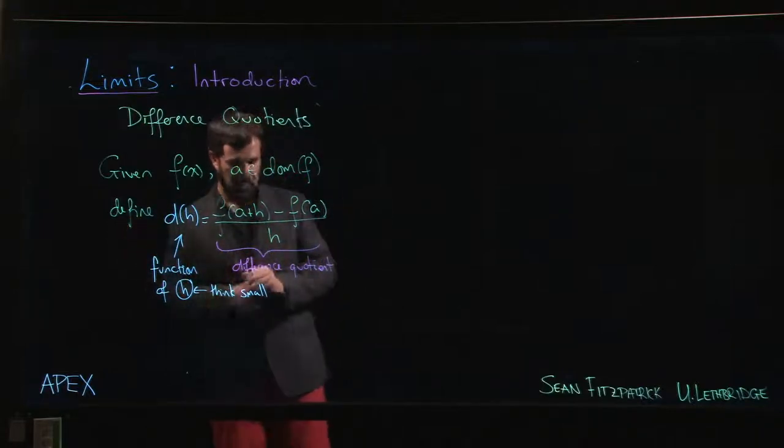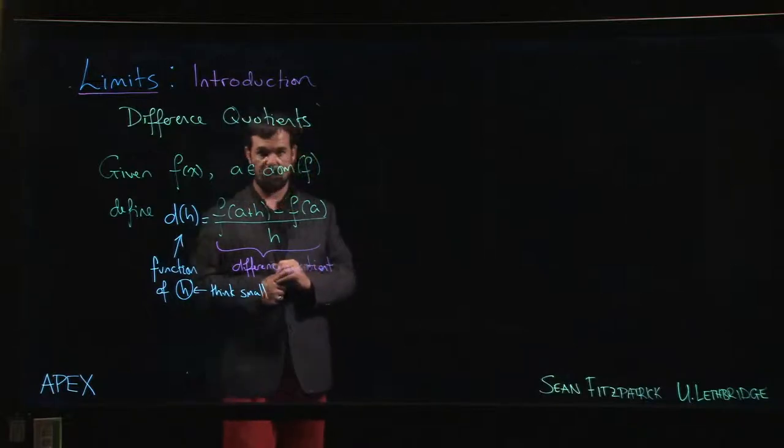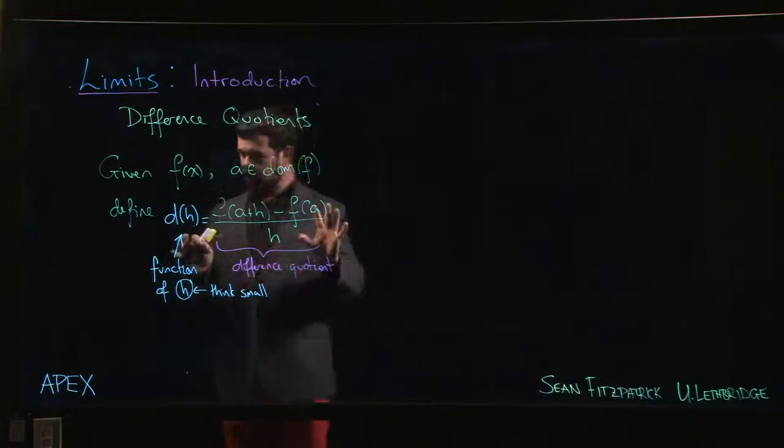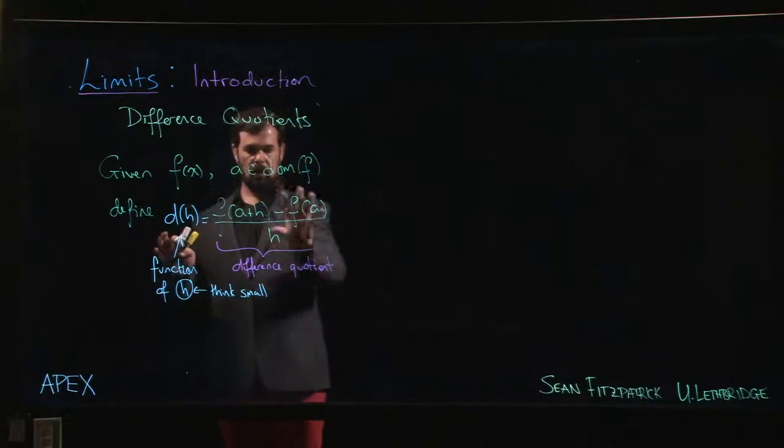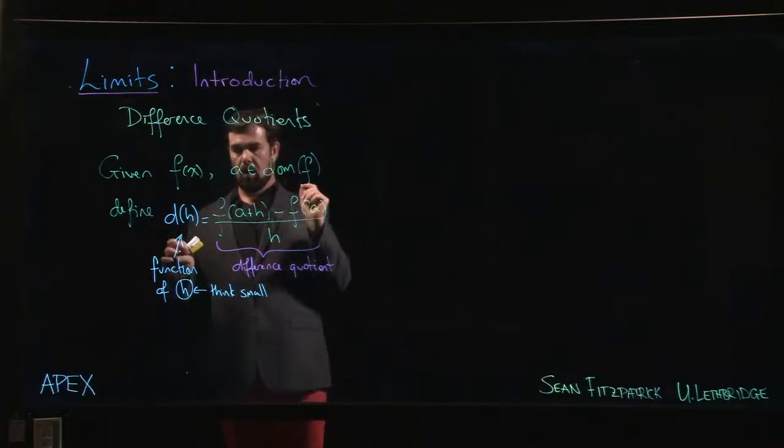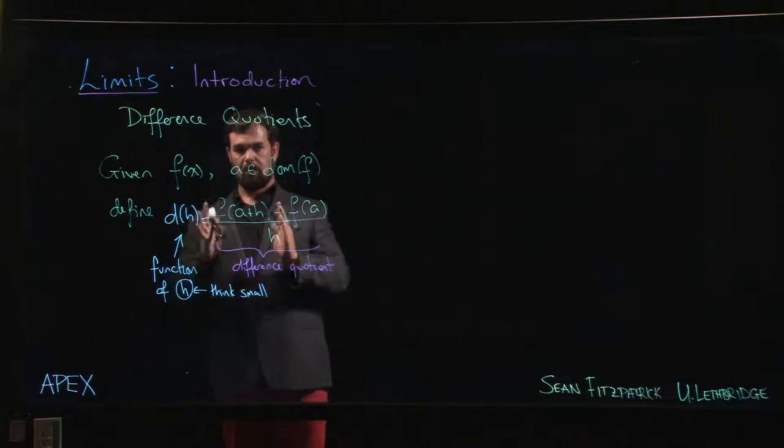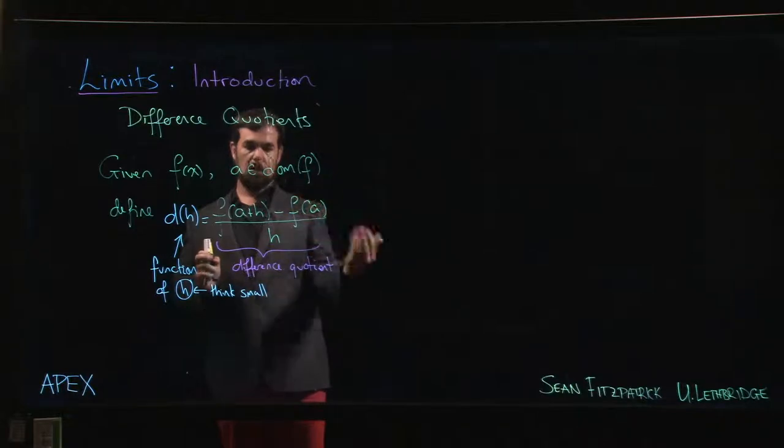And what you're doing here is you're looking at this ratio, you're looking at this average velocity, and you're asking yourself what happens as you calculate this increment, this absolute average value, over smaller and smaller and smaller values of H. So as you shrink that time step down, what happens to the average?